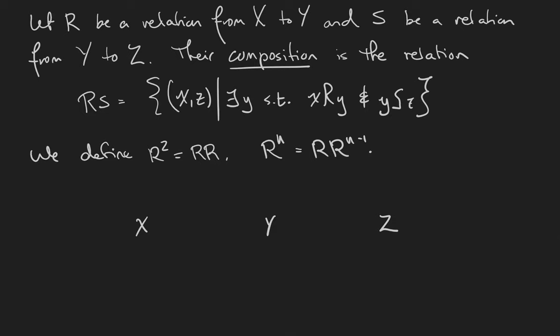Let R be a relation from X to Y, and let S be a relation from Y to Z. Then their composition, RS, is a relation from X to Z, consisting of the pairs (x, z), where there is a y such that x is related to y in R, and y is related to z in S.